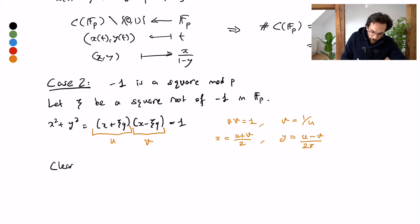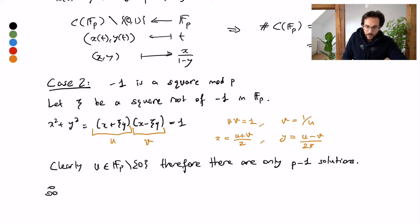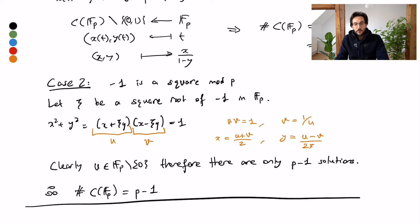Now clearly u has to be in F_p minus zero, and v is completely determined. Therefore there are only p minus one solutions. In other words, the number of elements in my set C(F_p) is going to be p minus one, and they're parameterized by invertible elements in F_p that I plug into u, solve for v equals one over u, and then solve for x, y.